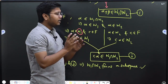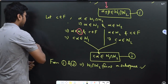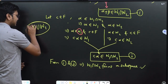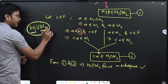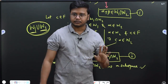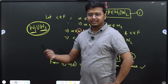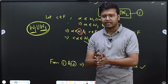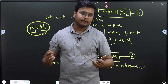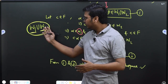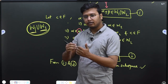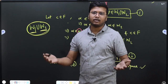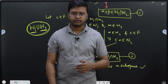A question for you: will the union of two subspaces W1 and W2 always form a subspace? Please let me know in the comments — if yes, give the reason; if no, give a counter example. See you in the next video, thank you.